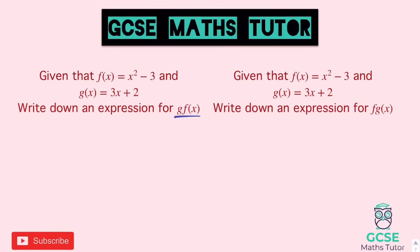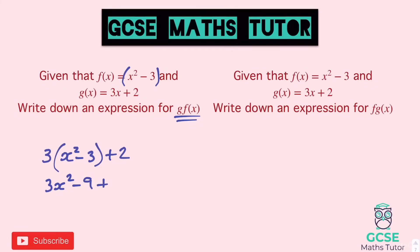Here are two more questions — have a go at both and we'll go over them. The first one says gfx — it's important to get the order right because both questions use the same two functions. This means what is g when we put f in. We put the brackets around the f function and sub it into g. So we have 3 lots of x squared minus 3, then plus 2 at the end. Expanding: 3x squared minus 9 plus 2, and tidying up: 3x squared minus 7.